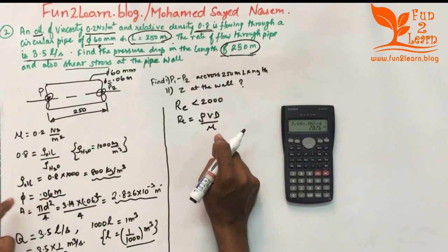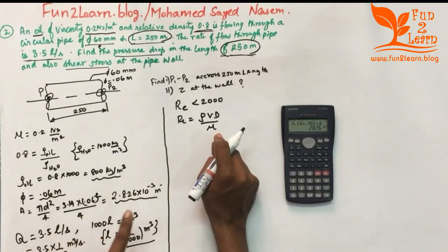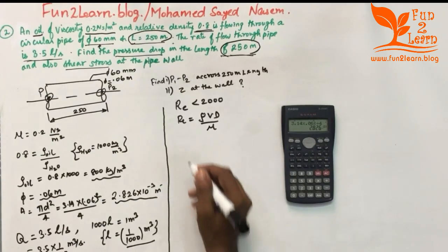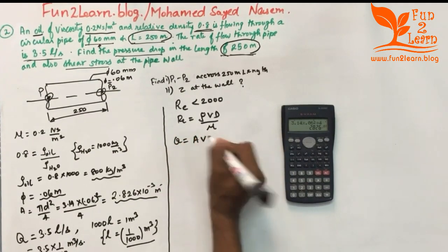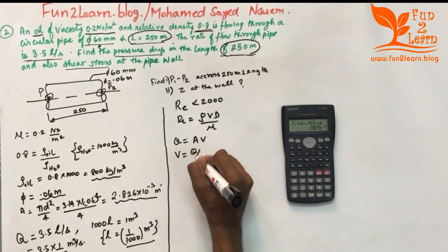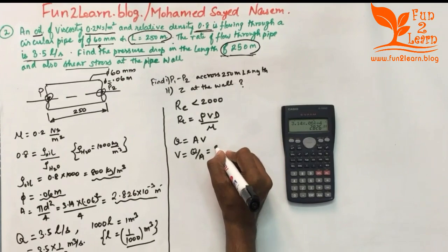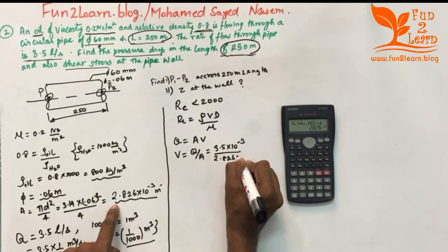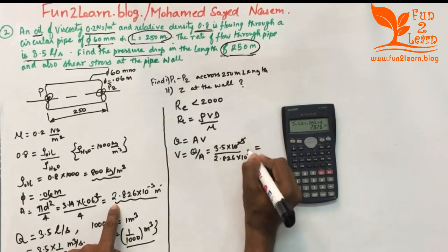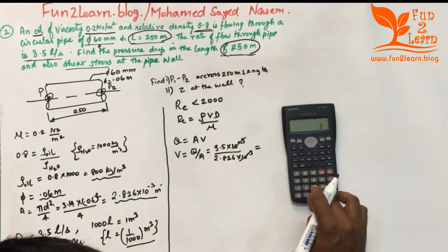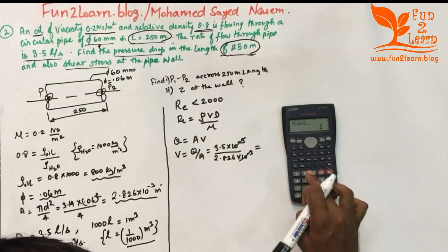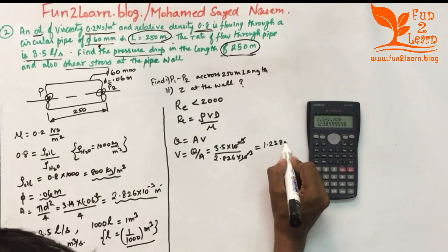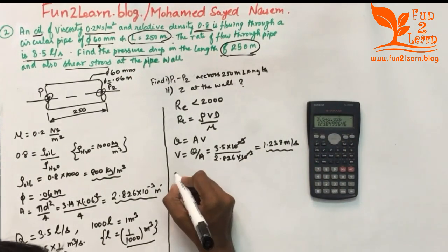Since discharge Q = A × velocity, velocity V = Q/A = (3.5 × 10⁻³) / (2.826 × 10⁻³). The 10⁻³ terms cancel, giving V = 3.5 / 2.826 = 1.238 meters per second. Now we can compute the Reynolds number using density 800, velocity 1.238, and diameter 0.06.